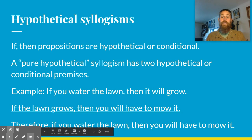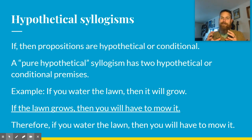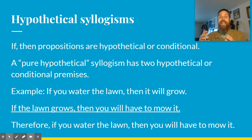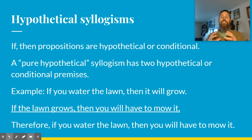If disjunctive syllogisms are simple, hypothetical syllogisms are confusing and complicated. Hypothetical syllogisms are syllogisms that have either one or two hypothetical or conditional premises. We're going to talk about pure hypothetical syllogisms, which have two conditional premises — like: if you water the lawn, then it will grow; if the lawn grows, then you will have to mow it; therefore, if you water the lawn, you will have to mow it.